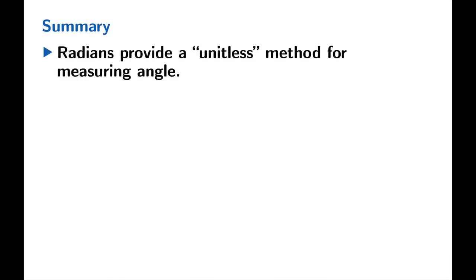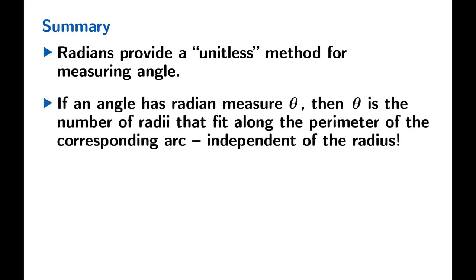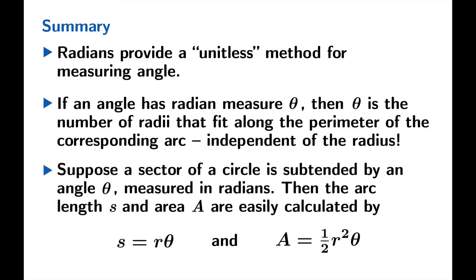So in summary, radians provide a very natural unitless method for measuring angle. If an angle has radian measure θ, then θ is the number of radii that fit along the perimeter of the corresponding arc, and this quantity is independent of the radius—it works for any size circle. And finally, if you measure angle in radians, then the arc length and the area of the sector subtended by the angle are easily calculated: s, the arc length, is rθ, and A, the area, is ½r²θ.